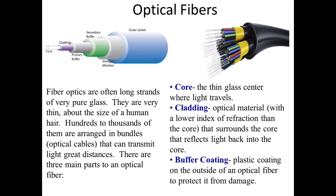Fiber optics are often long strands of very pure glass. They are very thin — about the size of human hairs — and due to their small size, hundreds to thousands of these fibers can be arranged in a bundle, as we can see here. These bundles are what we call optical cables in day-to-day life, and these optical fibers can transmit light for a very long distance.